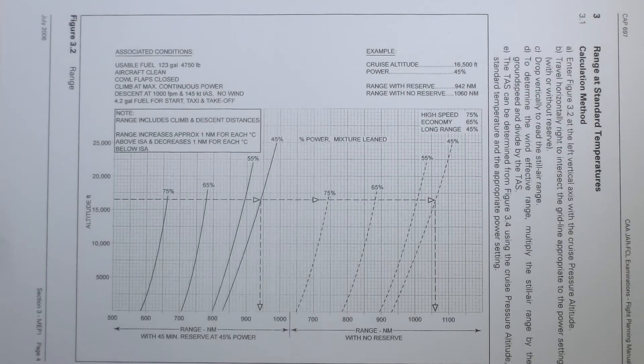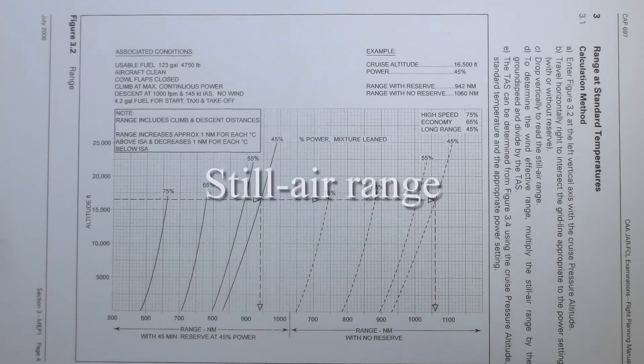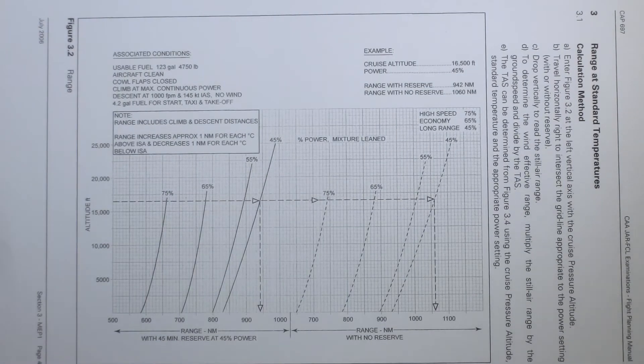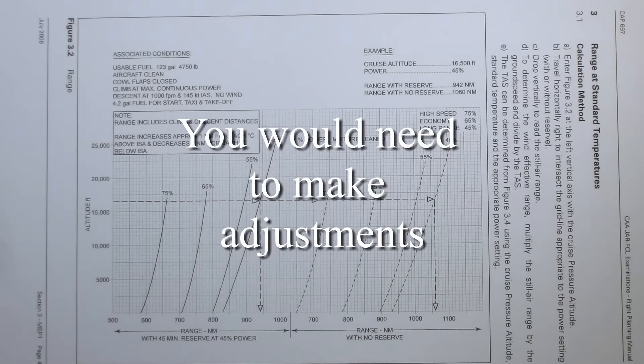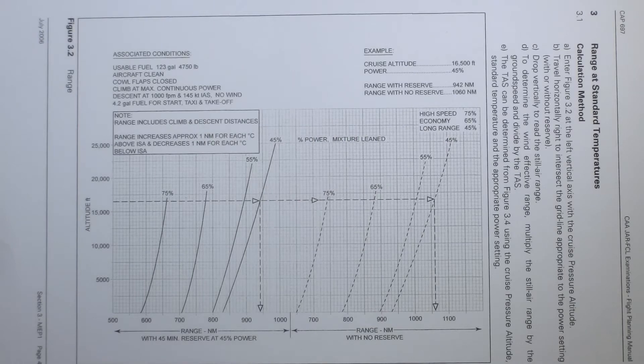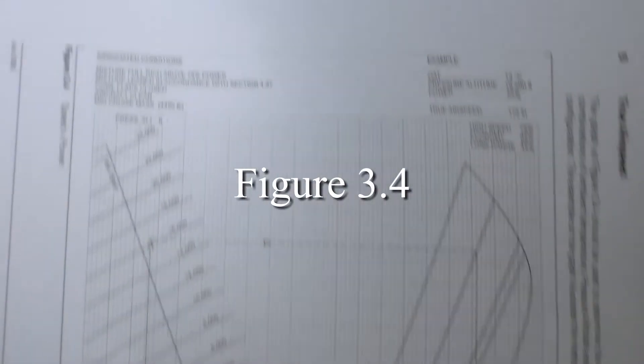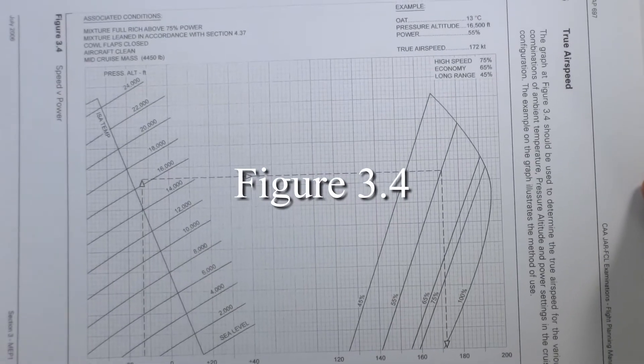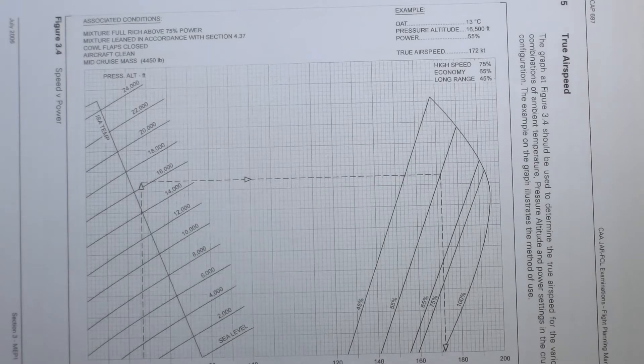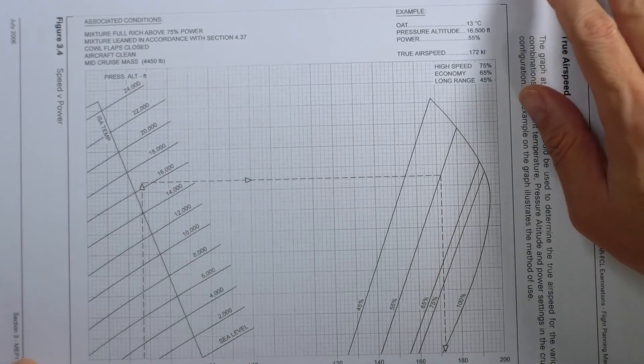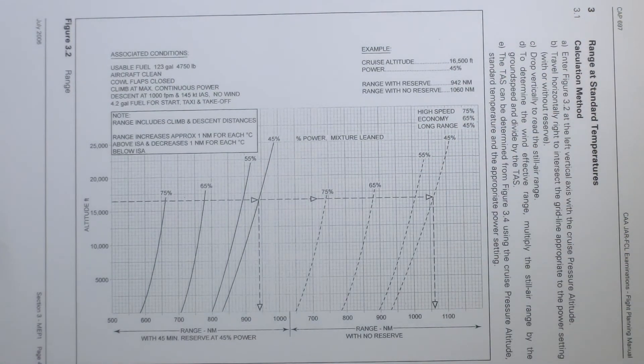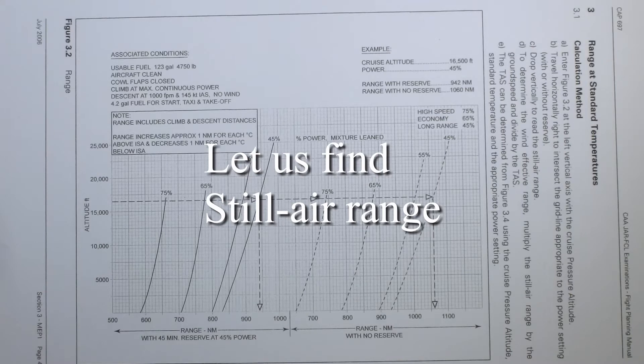Now take note that the range provided here is for still air, so this is not considering wind. If we want to obtain the wind-adjusted range then we would need true airspeed as well as ground speed. True airspeed can be obtained from figure 3.4, and that is this chart over here on MEP section 3 page 6. But we shall not look at this figure yet.